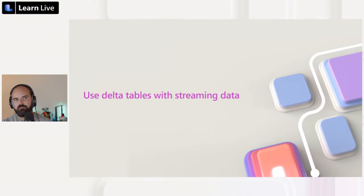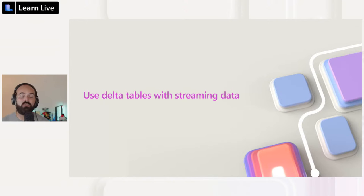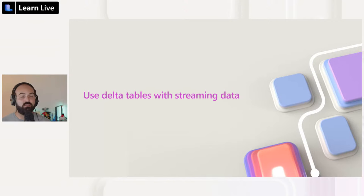From now on, we've seen how to use Delta tables with Spark, but we've only considered static data — like having some products in a CSV file loaded into a data table. Delta tables are used a lot with batch data, but one thing you can do is mix and match static or batch data with streaming data. With batch data, you might have maybe a hundred new items per second. But with streaming data, we can have millions of new records every second, and Delta tables and Spark allow you to work with that streaming data.